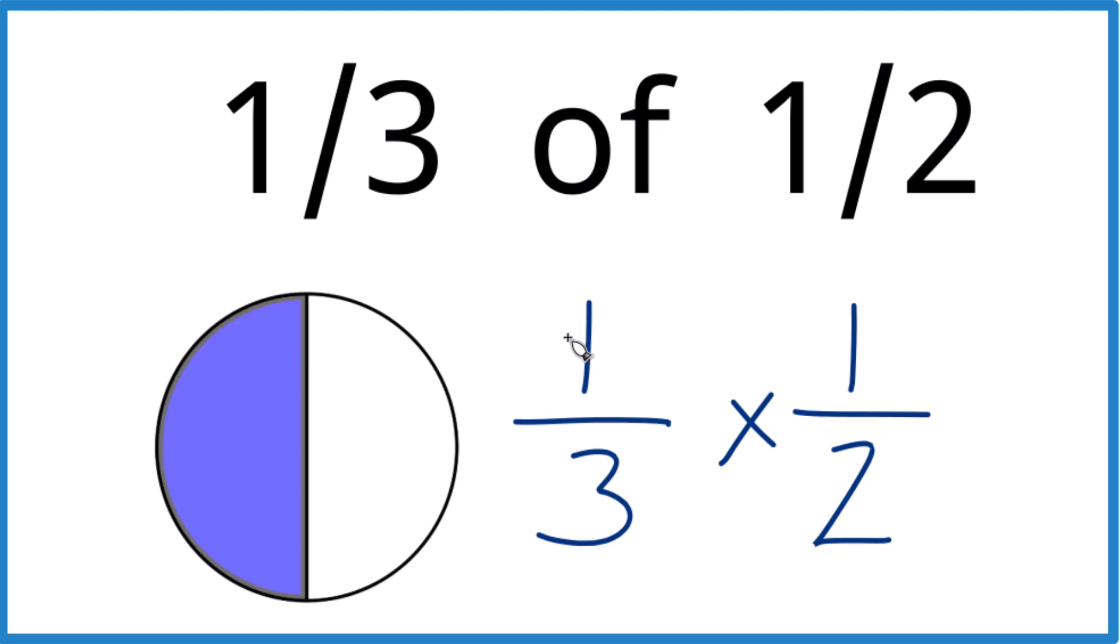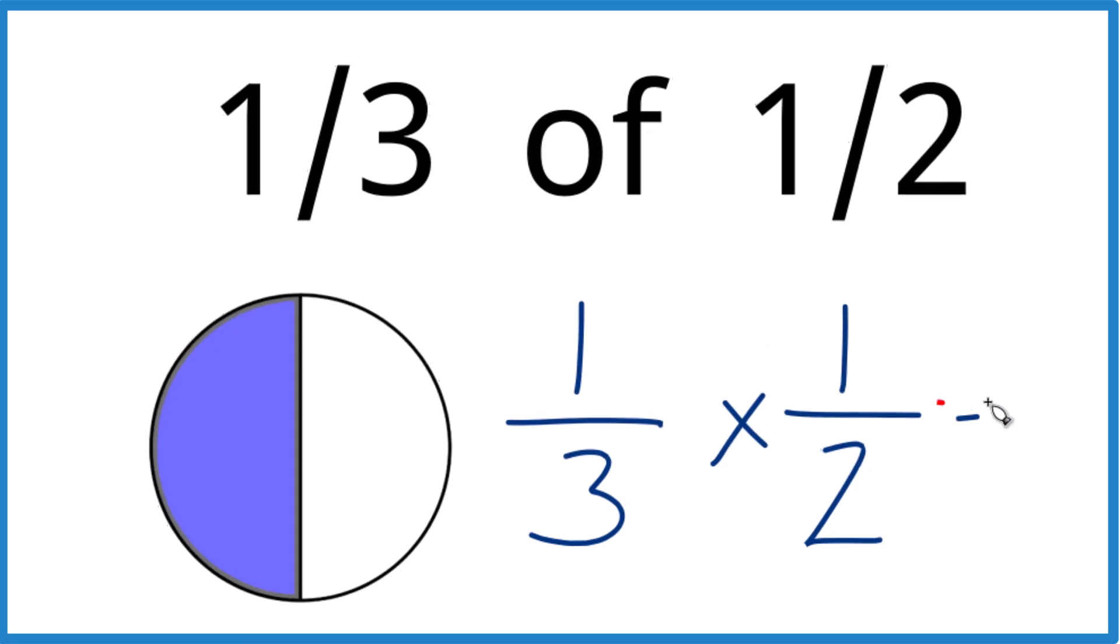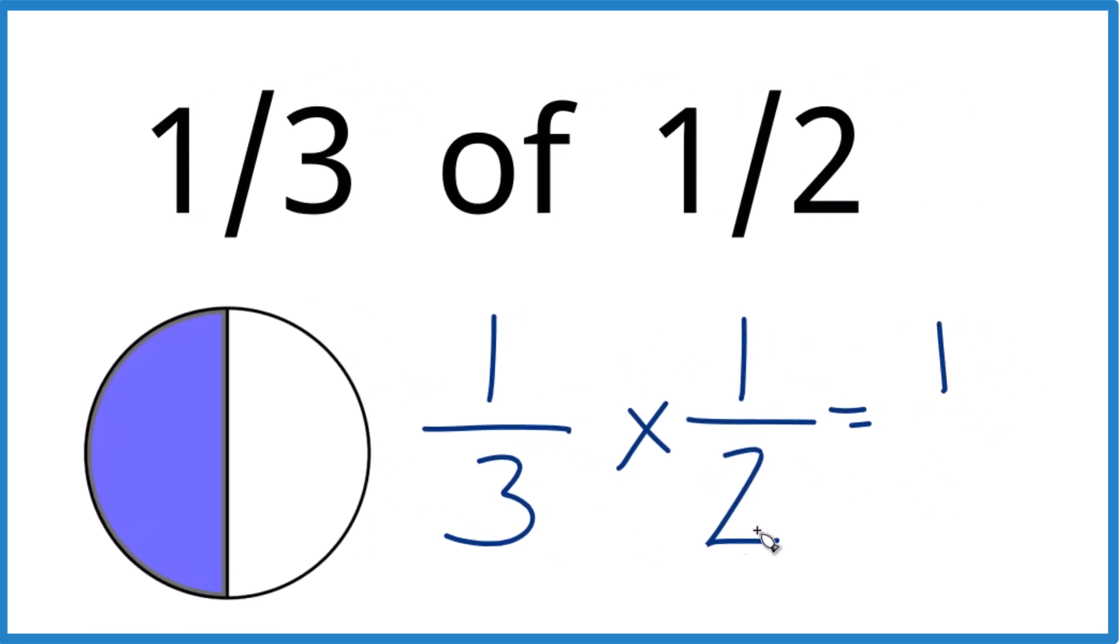So when we multiply fractions here, multiply the numerators: one times one, that's one. And then the denominators: three times two, that's six. And one third of one half, that's one sixth.